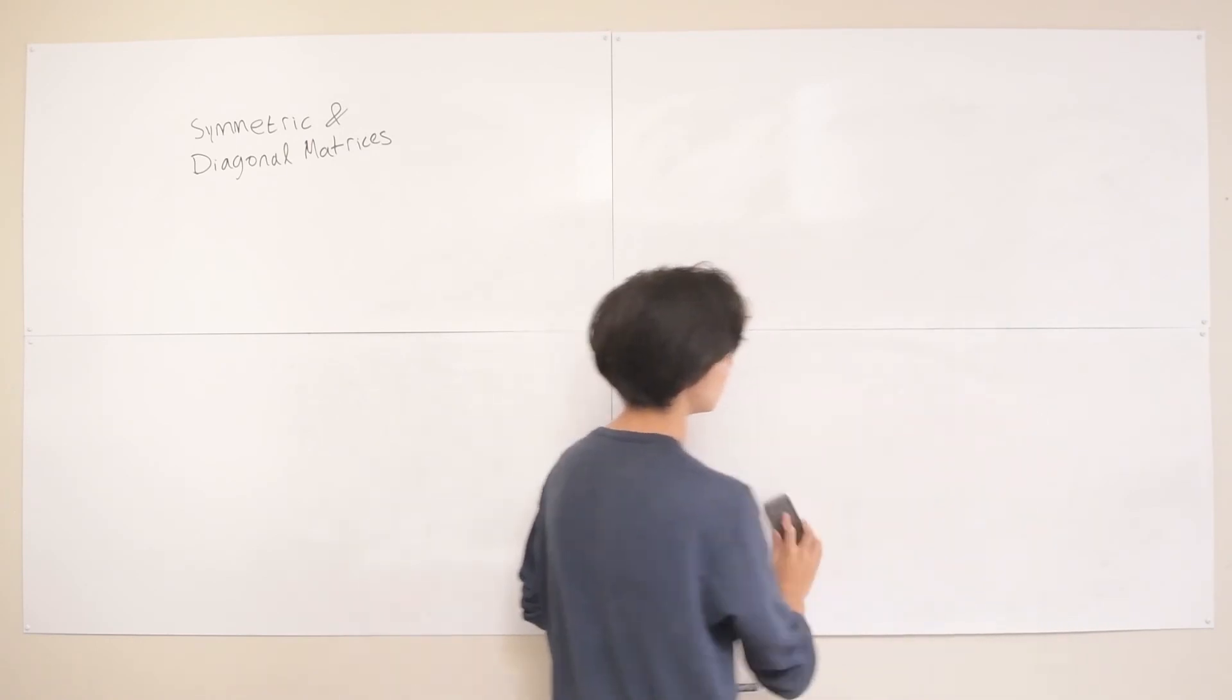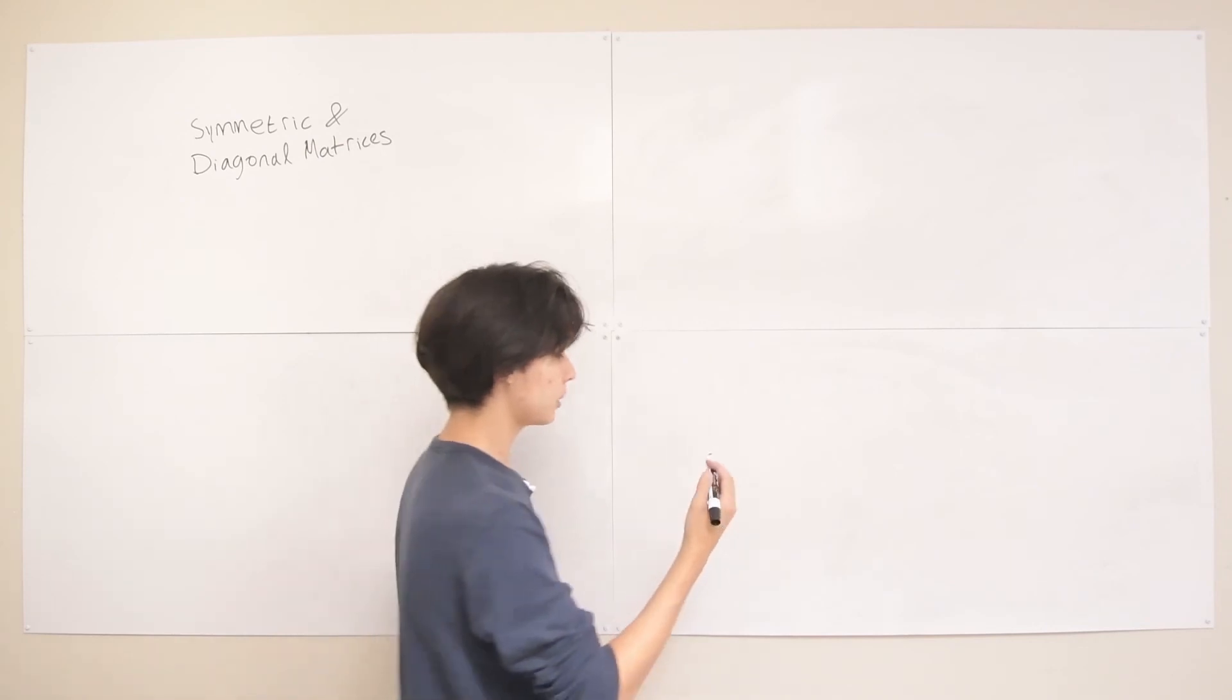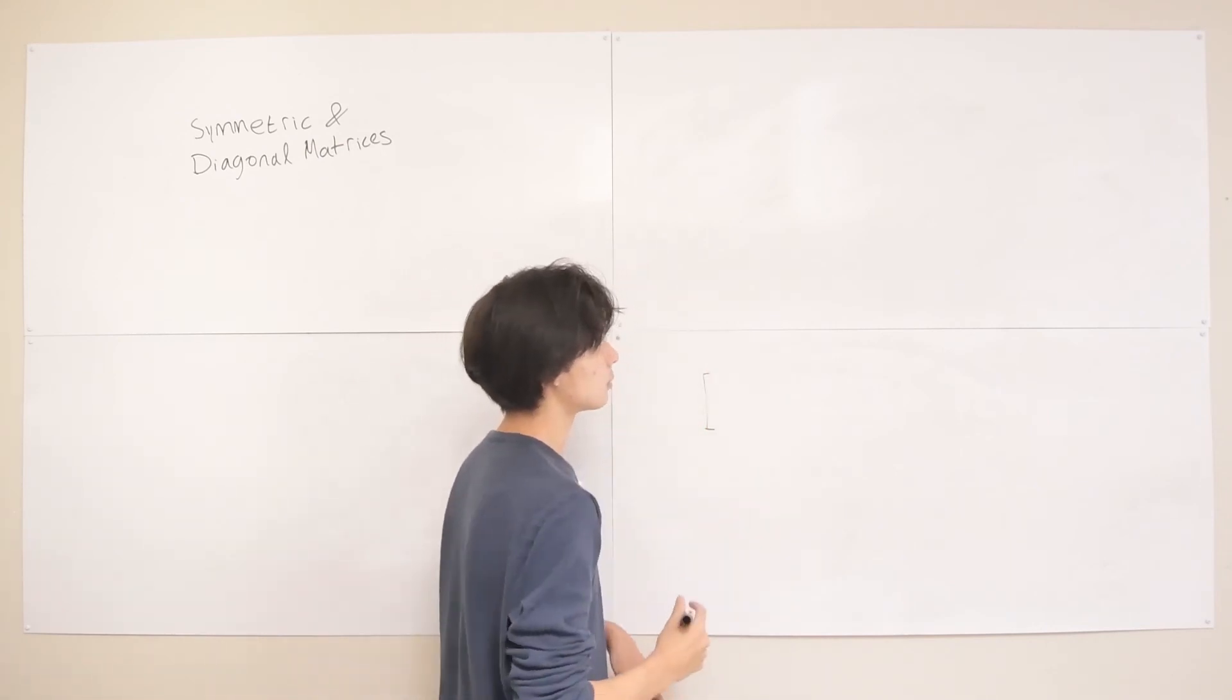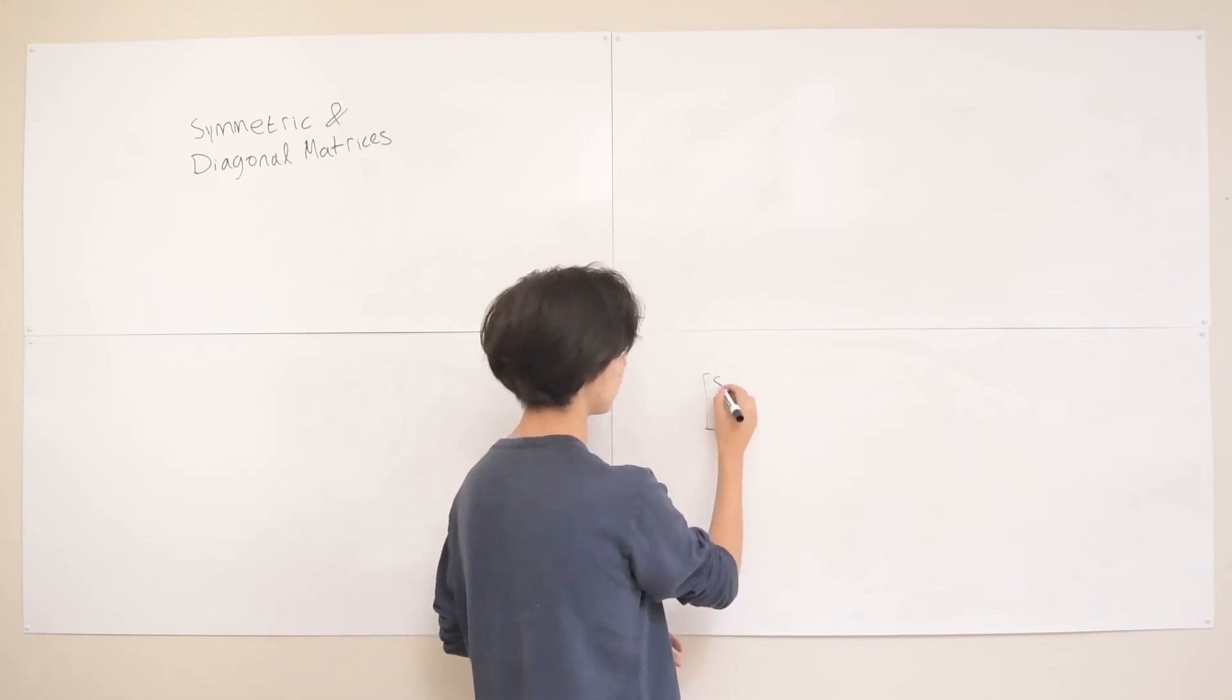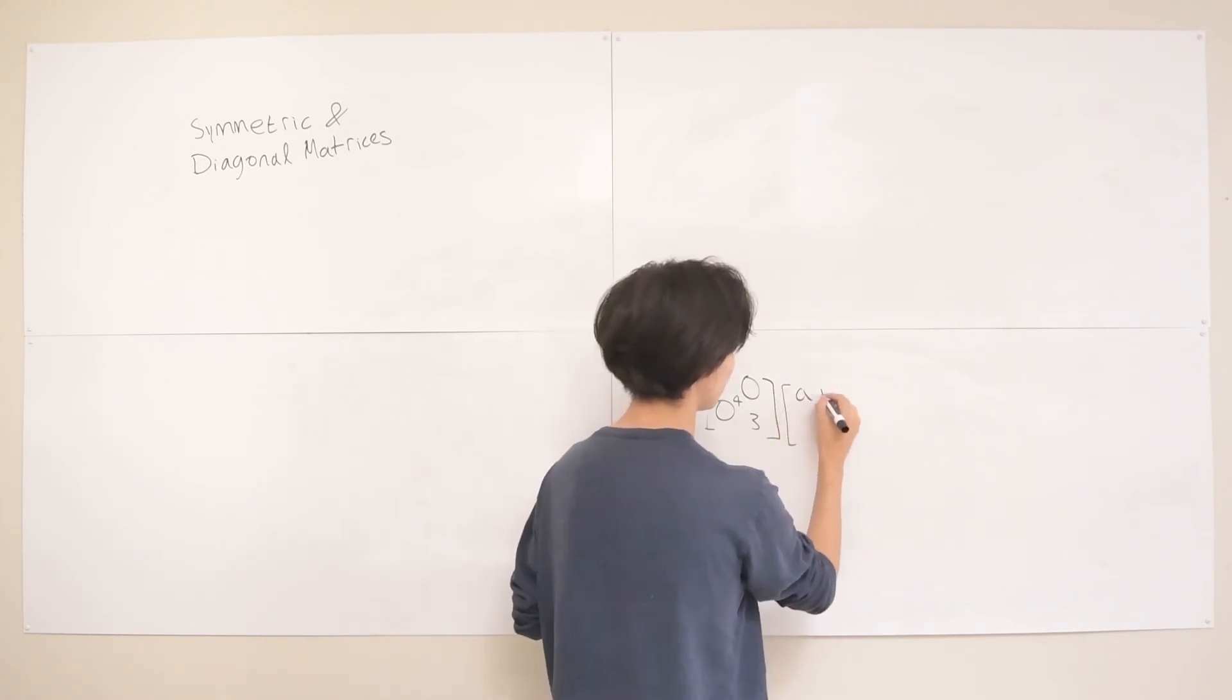And then the last thing is multiplying a diagonal matrix by another matrix, a normal matrix. And we see that that's almost equally as nice. So say we get some diagonal matrix, I'm not sure, 5, 4, 3. And then 0s everywhere else.